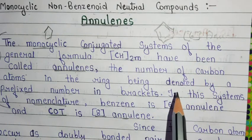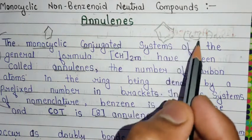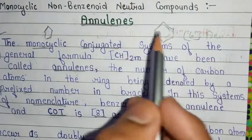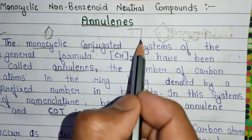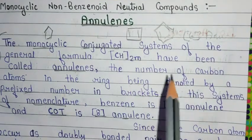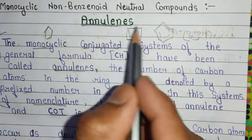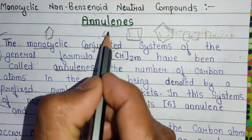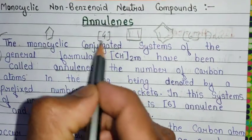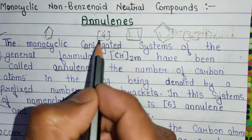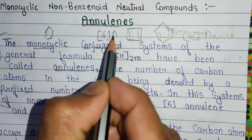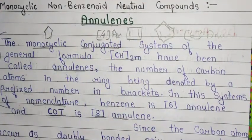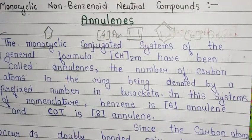That 6 is denoted by a prefix number in brackets. Similarly, cyclobutadiene has 4 carbons in this compound, so its name is [4]annulin. That is the basic concept of nomenclature of annulin. I hope you understood.